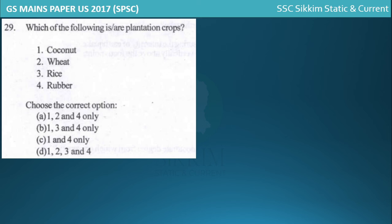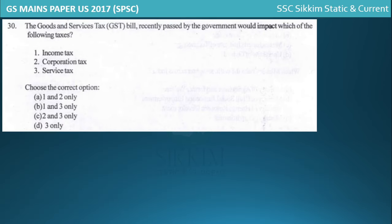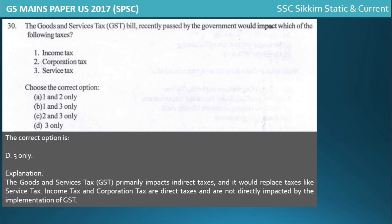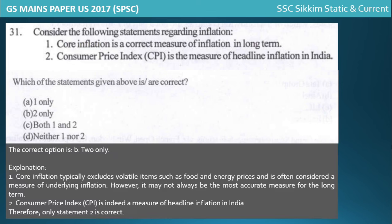For plantation crops, coconut and rubber are plantation crops, while rice is not typically considered a plantation crop. The GST Bill question notes that GST affects service tax but does not impact income tax or corporation tax. For inflation, CPI is the correct measure of headline inflation in India - this was the correct option for the economics question.